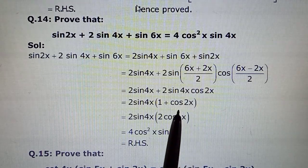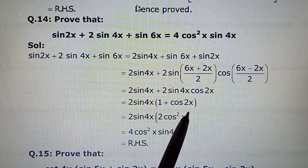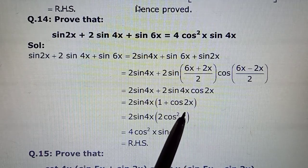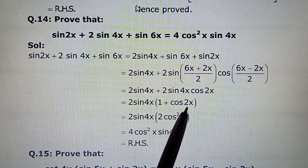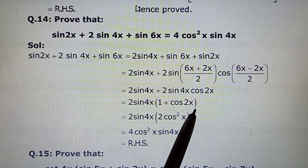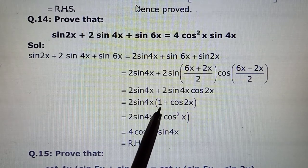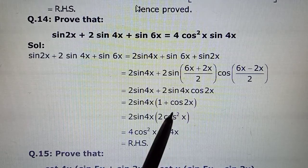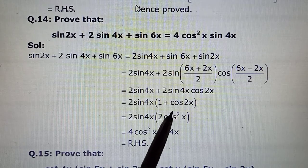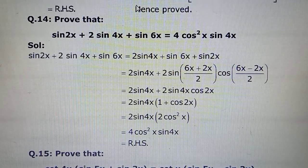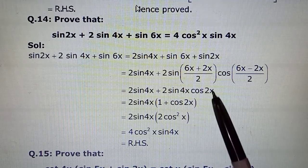So we end up getting this. Toh aapko half angle formula strike kar jayega. You can consider ki yahan mere paas cos x hai not 2x. And phir aapko dikhega hai, cos 2x ki 3 formulas hain: cos²x - sin²x, or maybe 1 - 2sin²x, or 2cos²x - 1. So it's up to you which out of the 3 or 4 forms I should go for.